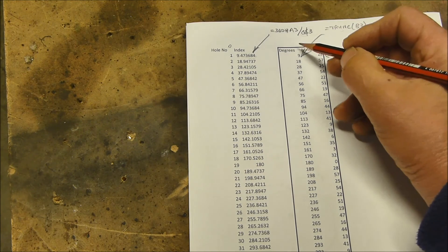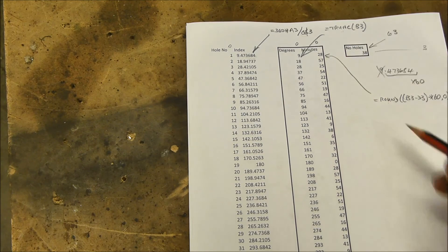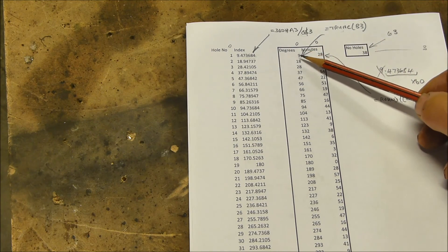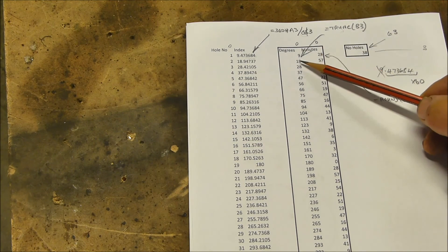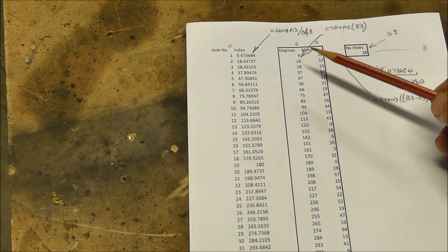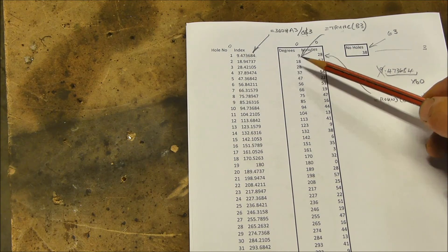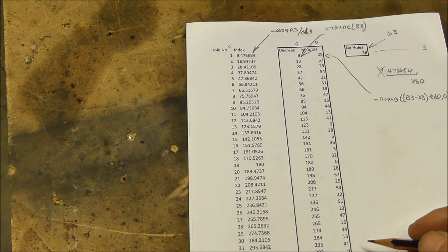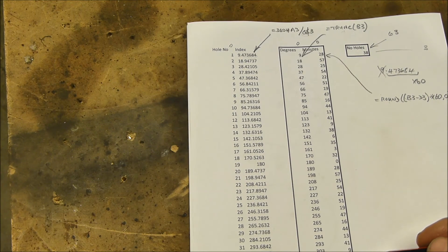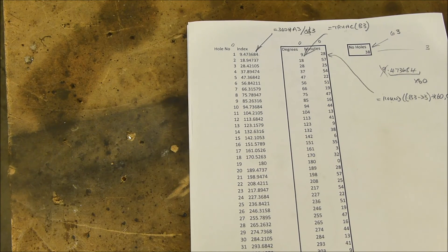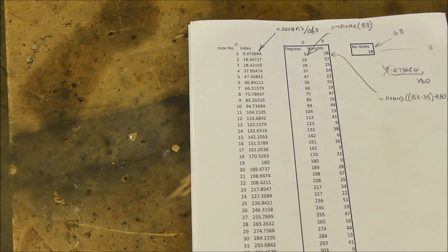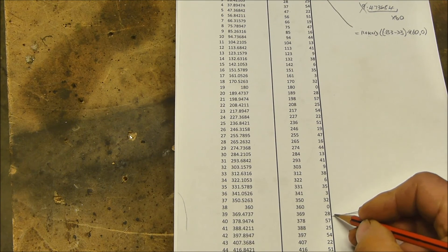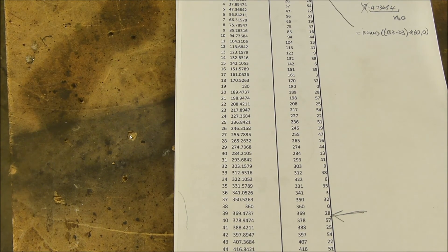And so we now have a table of hole positions on our disc in degrees and minutes. So we drill the first hole at 0, 0. We drill the next hole at 9 degrees, 28 minutes. We drill the next hole at 18 degrees, 57 minutes. Drill the next hole at 28 degrees, 25 minutes, etc. And I am drilling 38 holes. So I will stop just there. So I stop at this point here after I've done my 38 holes.